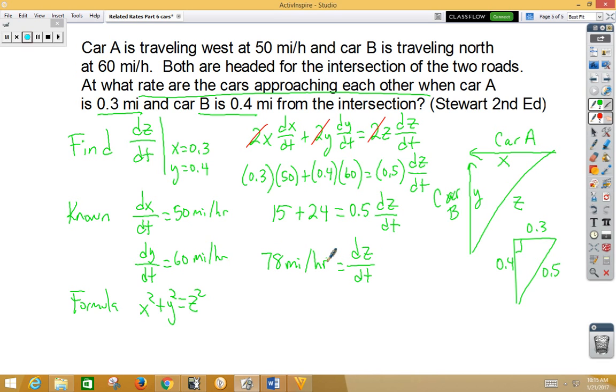Now before we finish, we want to keep track of whether that distance is getting larger or smaller. As the cars are heading towards each other, that distance is getting smaller, so we should have a negative value there. We could have determined that by looking back at our known values, because they're heading toward each other, those distances should be negative.